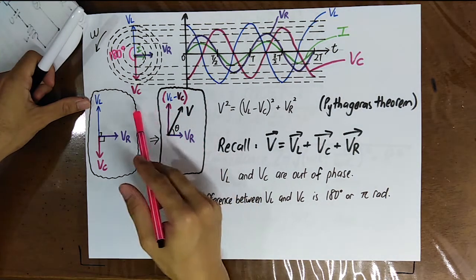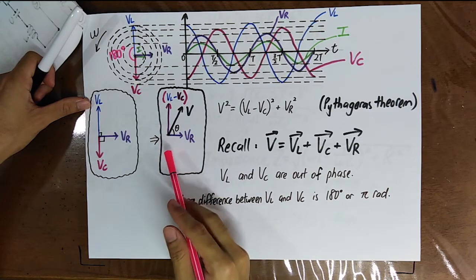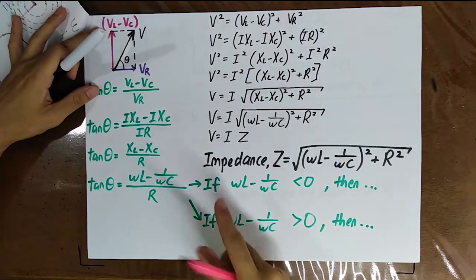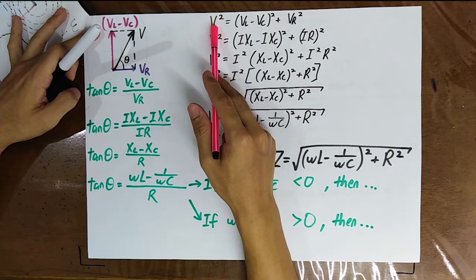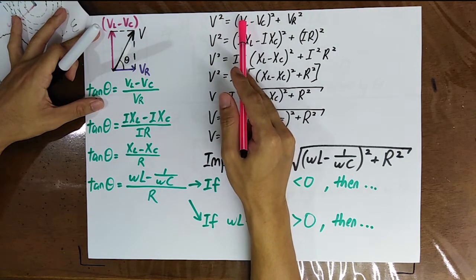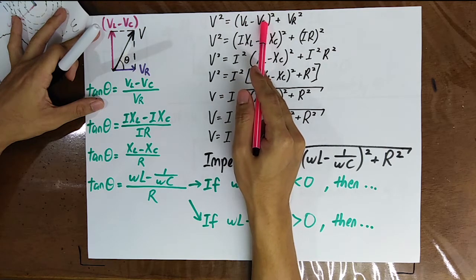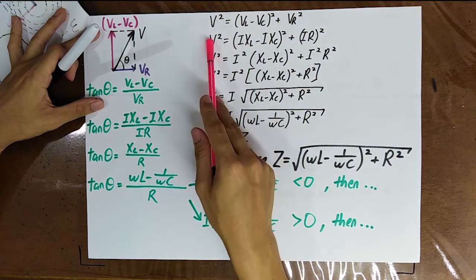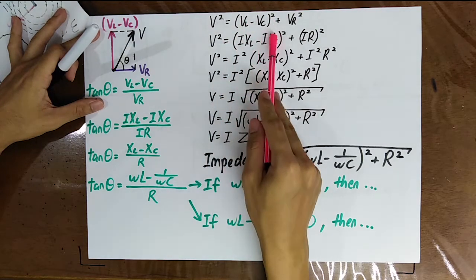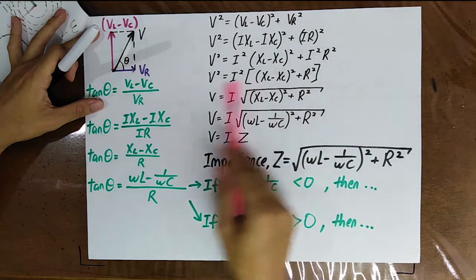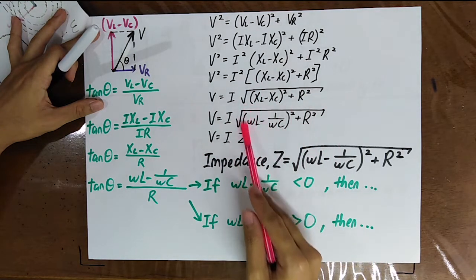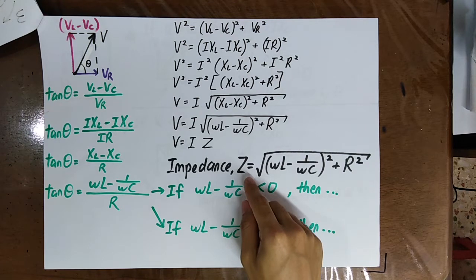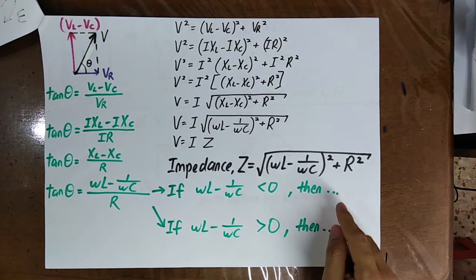The final phasor diagram gives the relationship between source voltage V, VL, VC, and VR. With VL = IXL, VC = IXC, and VR = IR, the impedance formula becomes Z = √((ωL − 1/ωC)² + R²). This is the impedance formula for an RCL series alternating current circuit.